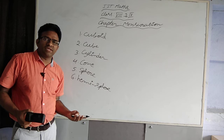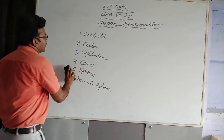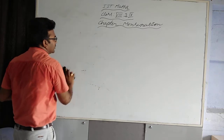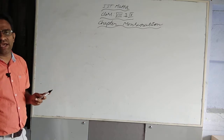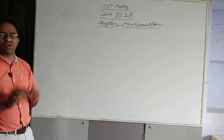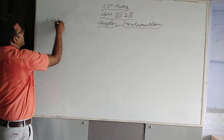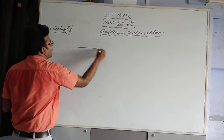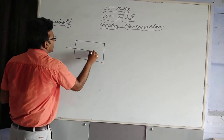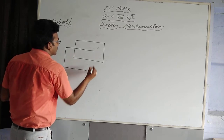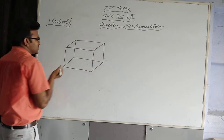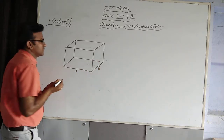Now we are going to derive each and every one: their total surface area, lateral surface area, and volume. First of all, we are considering the cuboid. I want to derive a formula for the cuboid. After that, we are going to take examples and finish with problems for each and every solid object. I want to draw the figure — length, breadth, and this is height.